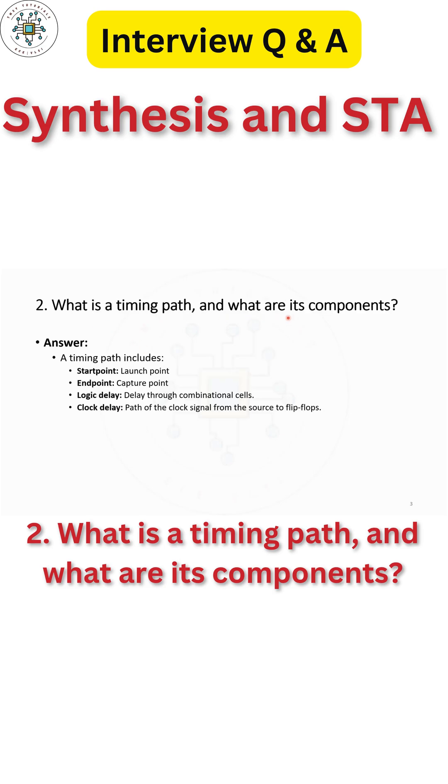Next, what is a timing path and what are its components? So we have discussed already the four types of timing paths: that is input to register, register to register, register to output, and input to output.